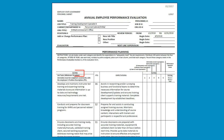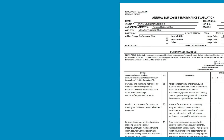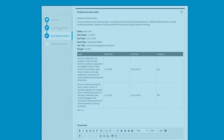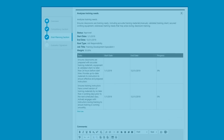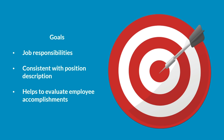Job duties once listed on performance evaluations are now referred to as goals. Your goals will include job duties and responsibilities. These performance goals help your supervisor evaluate your accomplishments throughout the year.